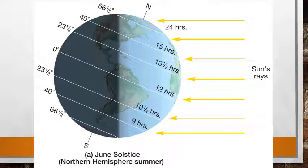On June 21st, the summer solstice, the rays of the sun fall vertically on the Tropic of Cancer — the altitude of the midday sun at the Tropic of Cancer is 90 degrees. The north pole is tilted towards the sun. The northern hemisphere has the longest day and the shortest night, with a day of 24 hours beyond the Arctic Circle. The duration of light increases from the equator towards the north pole, from 12 hours at the equator to 24 hours at the north pole.